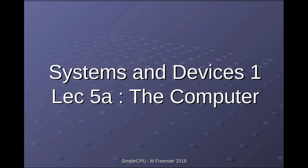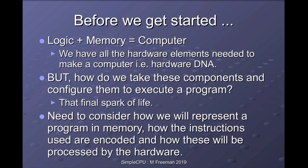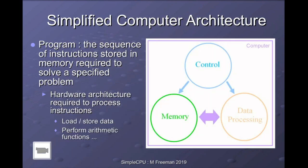Welcome to Systems and Devices, Lecture 5a: The Computer. This is where we take all those basic building blocks and pull them together into a processor. In the previous lectures we looked at the fundamental building blocks: the logic gates, and how we could use those to build high-level components like the multiplexer, the adder, and our registers. Now we need to consider how we can use those to actually build a computer — how we implement a machine that can execute a program. A program is just a sequence of instructions, a sequence of operations inside a machine to solve a specific task.